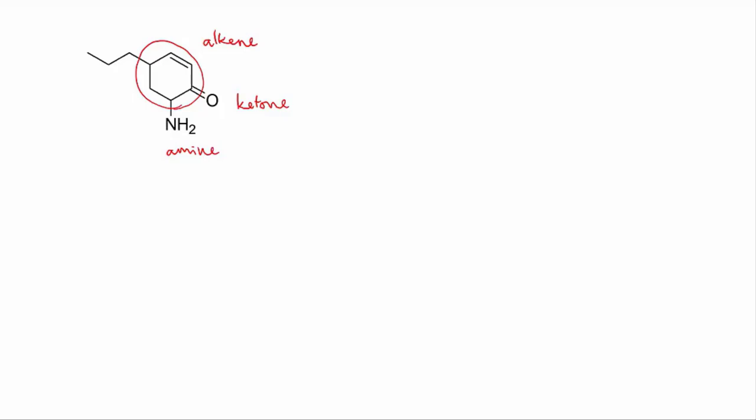Now out of our three functional groups, the ketone has the highest priority. The ring is six carbons long, and with the double bond we would call that cyclohexene, but with the ketone group it becomes cyclohexenone.